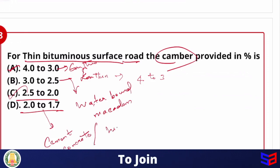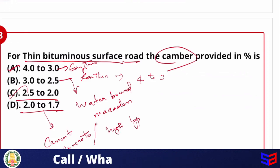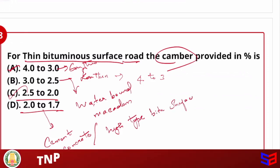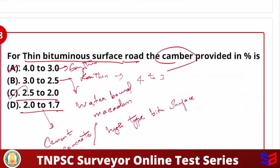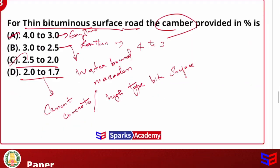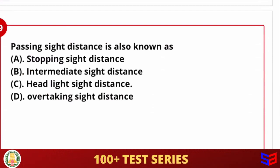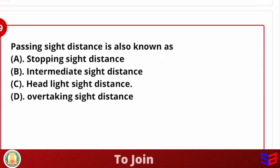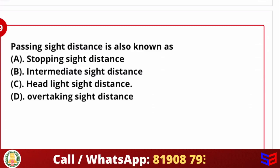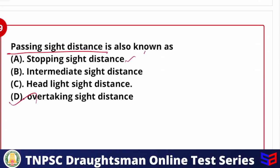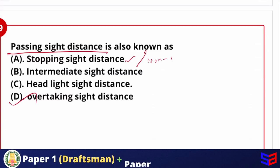Next question: passing sight distance is also known as what? The options include stopping sight distance, intermediate sight distance, headlight sight distance, and overtaking sight distance. Passing sight distance is also known as overtaking sight distance. Stopping sight distance is also known as non-passing sight distance.